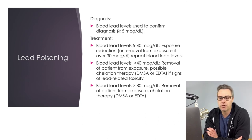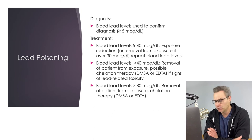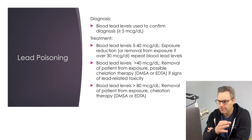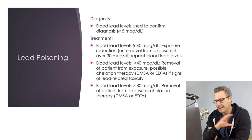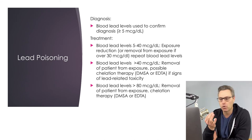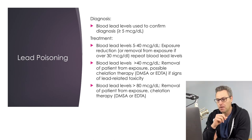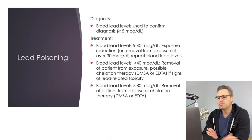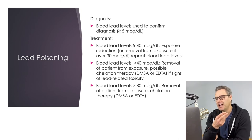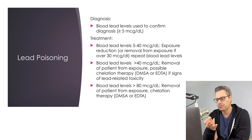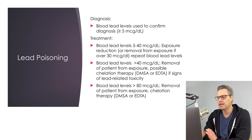If the lead level is between 5 and 30 micrograms per deciliter, patients should reduce exposure to the identified lead source. If levels are above 30, they should completely avoid any exposure — which may mean finding a different job. Blood lead levels should be repeated to ensure they're declining over time. If levels are above 40 and the patient is symptomatic, give chelation therapy with EDTA or DMSA. If levels are above 80, remove the patient from exposure and definitely administer chelation therapy.